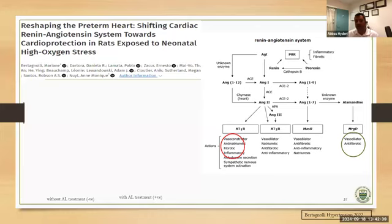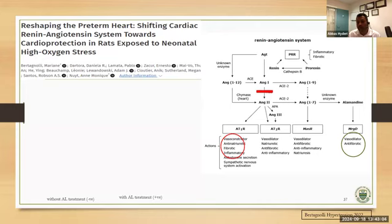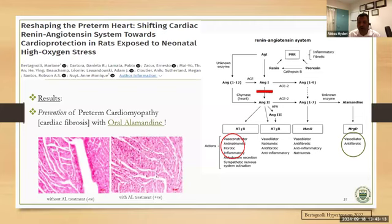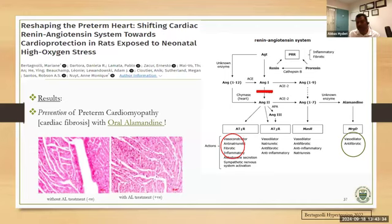Another fascinating work, again by Marianne from McGill. The renin-angiotensin system has two arms: one pro-fibrotic and one anti-fibrotic. By blocking the pro-fibrotic pathway and letting metabolites drain into the anti-fibrotic pathway — using oral alamandine — she could replicate the same findings as with ARBs. It's a proof of concept that by modulating the renin-angiotensin axis, you can reduce preterm cardiomyopathy. Without alamandine there was lots of fibrosis; with alamandine, minimal fibrosis.